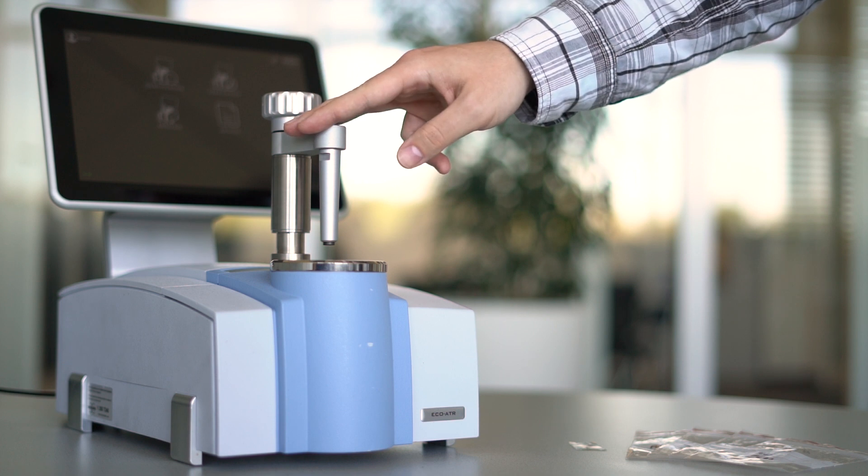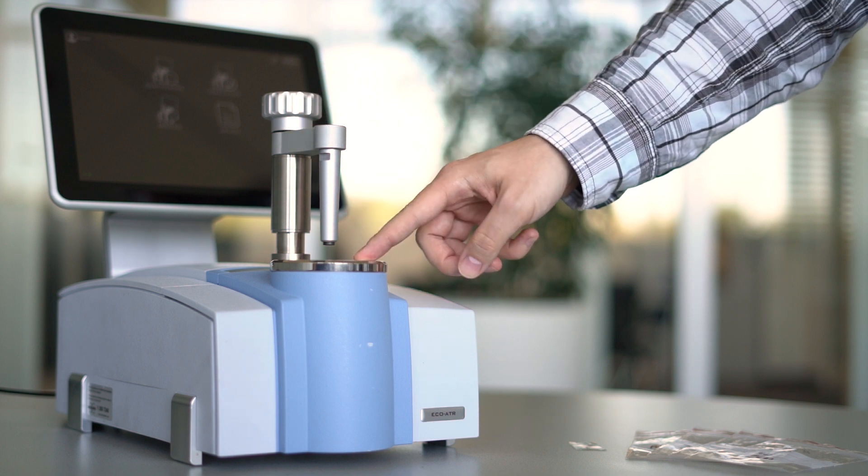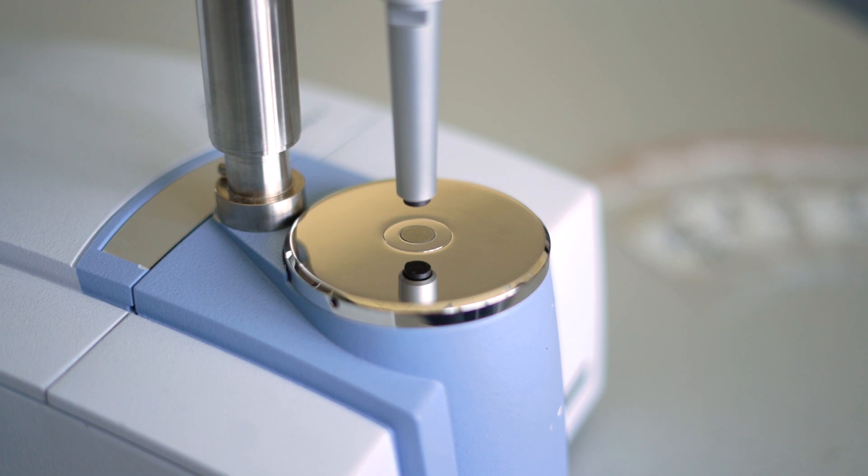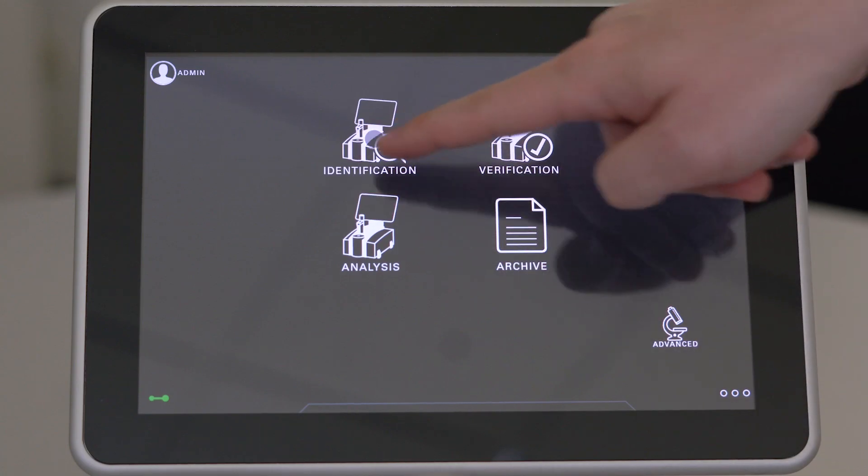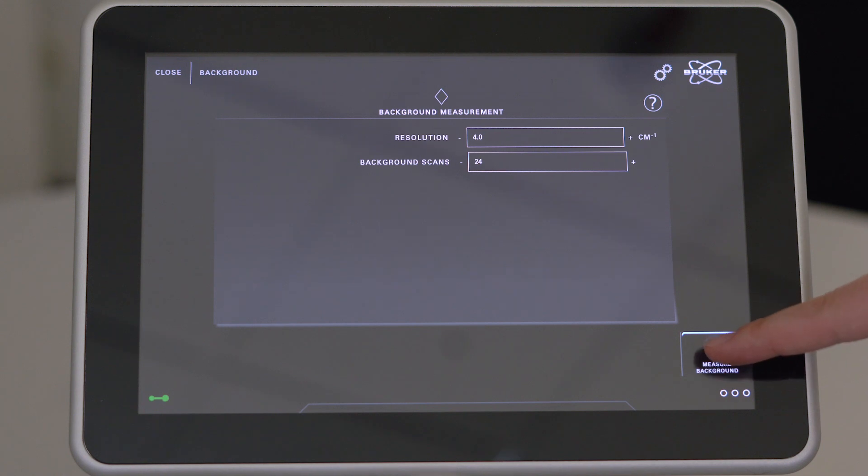We are going to use the attenuated total reflection measurement technique, in short ATR. More precisely, we are utilizing a germanium ATR crystal. With this setup, we can specifically analyze the first micron of a sample surface, making it perfect to investigate thin layers.